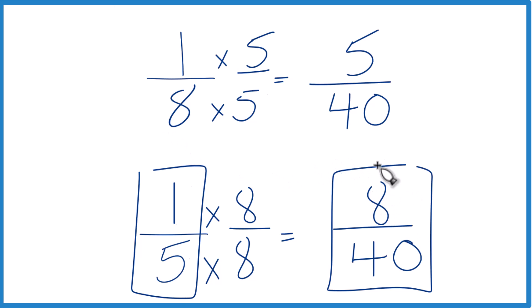And we can see by how much. 8 minus 5 is 3. So 1/5 is 3/40 larger than 1/8. This is Dr. B. Thanks for watching.